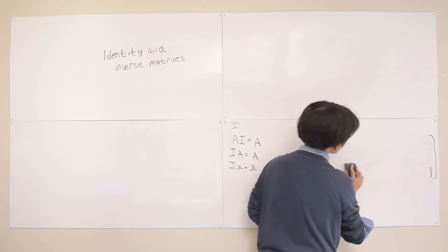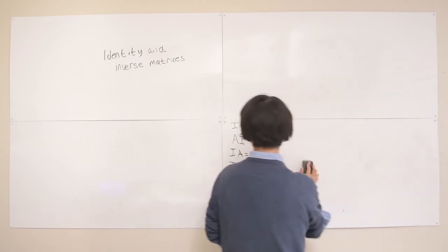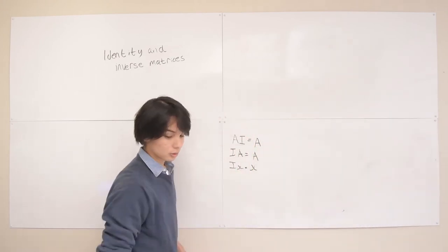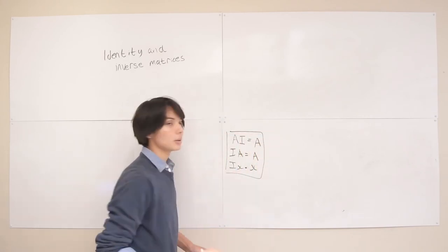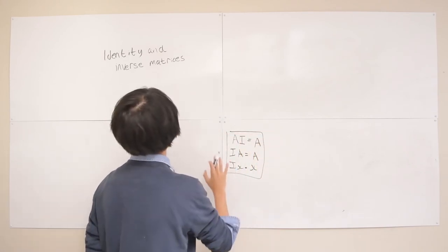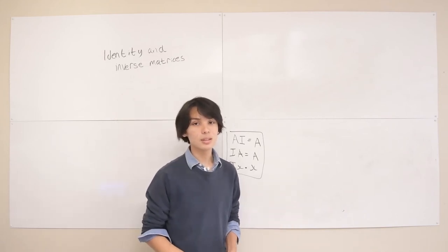And inverse matrices, let me just finish covering all this up. Okay, I'll keep this here. So these are properties of identity matrices, but inverse matrices are something quite different, but related.